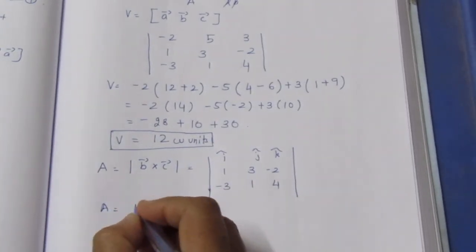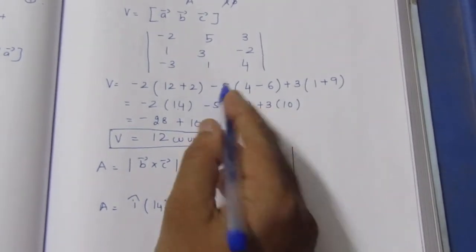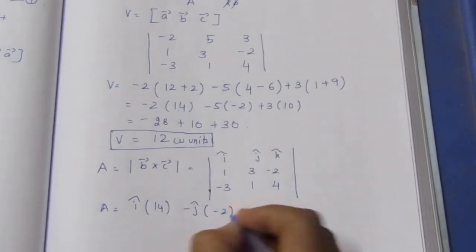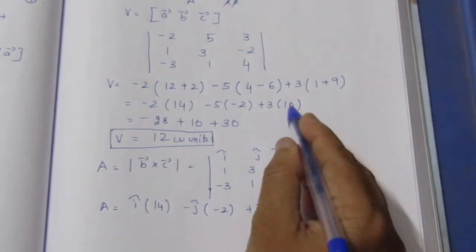B cross C equals i(12-(-2)) - j(4-6) + k(1-(-9)).